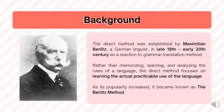The direct method was established by a German linguist, Maximilian Berlitz, in the late 19th to early 20th century, as a reaction to the grammar translation method. Unlike the grammar translation method that focuses on memorizing, learning, and analyzing the rules of a language, the direct method focuses on learning the actual practicable use of the language. As its popularity increased, it later became known as the Berlitz method.